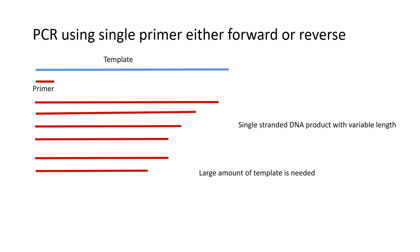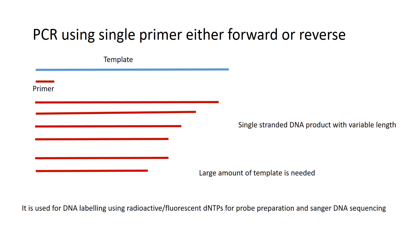One disadvantage with this method is that you need a large amount of template, because amplification is occurring from only a single strand. You need a large amount of template to get a high quantity of the single-stranded DNA product you intend to amplify. This method is generally used for DNA labeling reactions using radioactive dNTPs or fluorescent dNTPs, for probe preparation in southern hybridization, northern hybridization, etc.